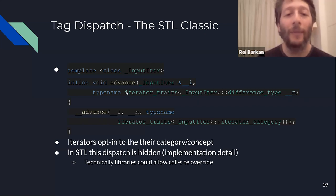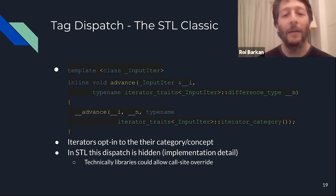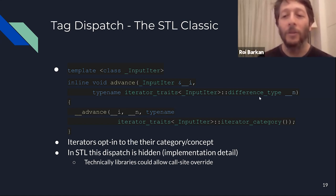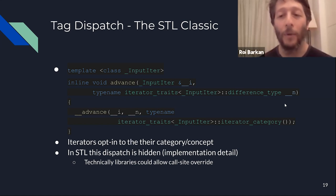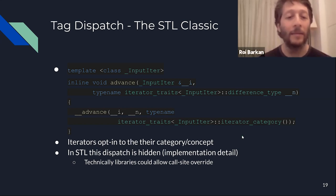Whatever iterator I pass into advance must have an iterator_traits specialization and an iterator_category definition to allow the library to choose which type of advance to perform. Some iterators are random access and can jump N steps in one operation using += ; others are not, and I need to call ++ N times.